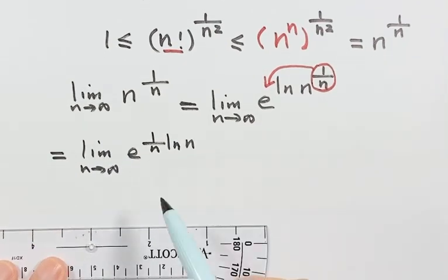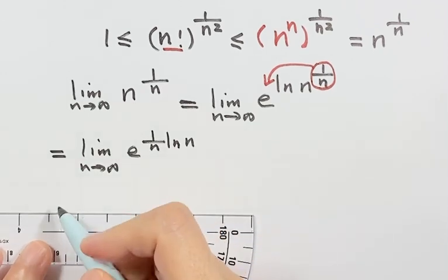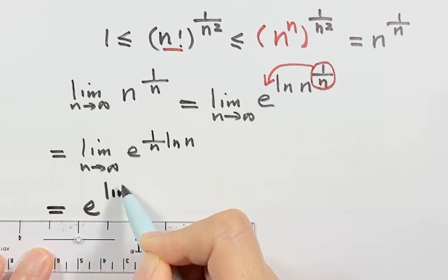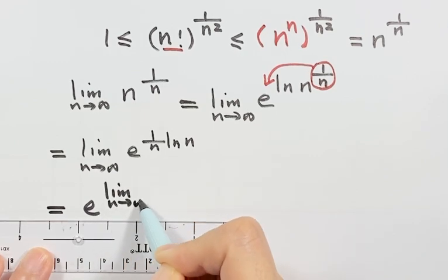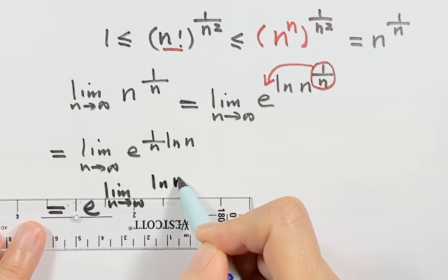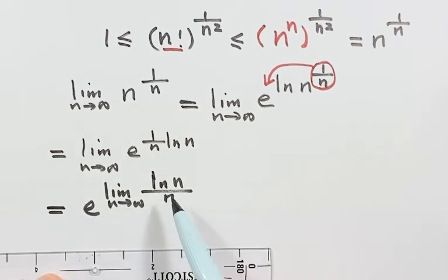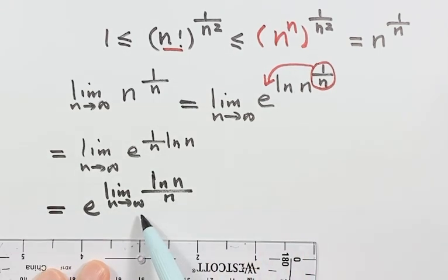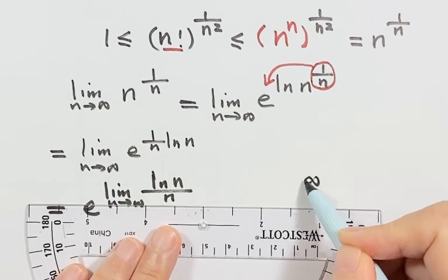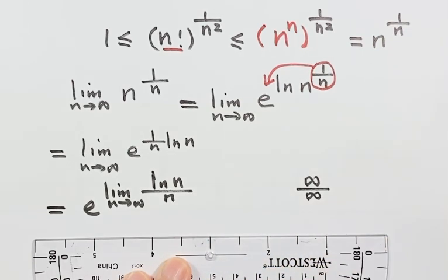Because this limit is above the power, we can put the limit inside. So here we have e to the power of the limit of log n divided by n. Then what is this limit? Because as n goes to infinity, the numerator goes to infinity and also the denominator goes to infinity, so it's infinity over infinity — an indeterminate form.